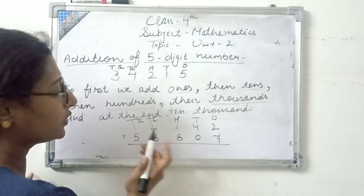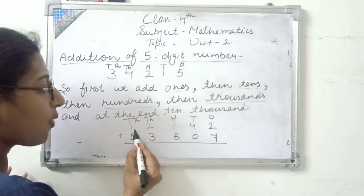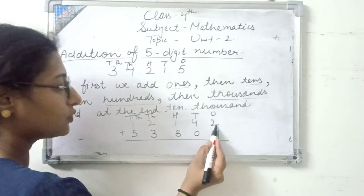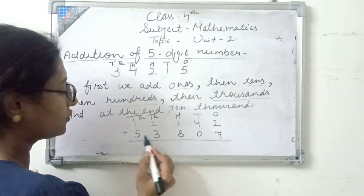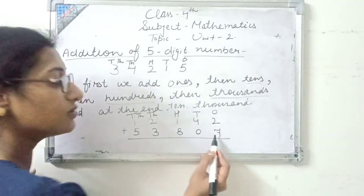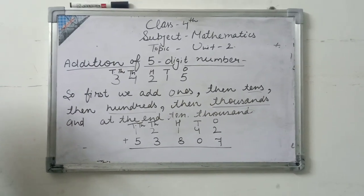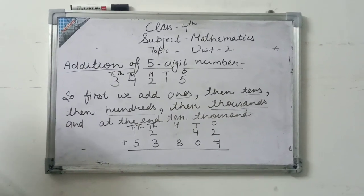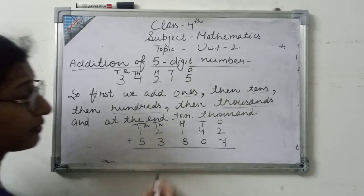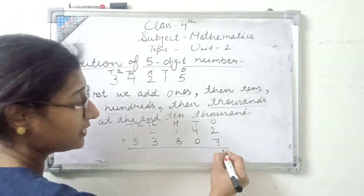So where I have written the example, we have to add: 1, 2, 1, 4, 2 plus 5, 3, 8, 0, 7. Am I right? So now first which will we add? 1st place digit. Means 2 plus 7, 9.